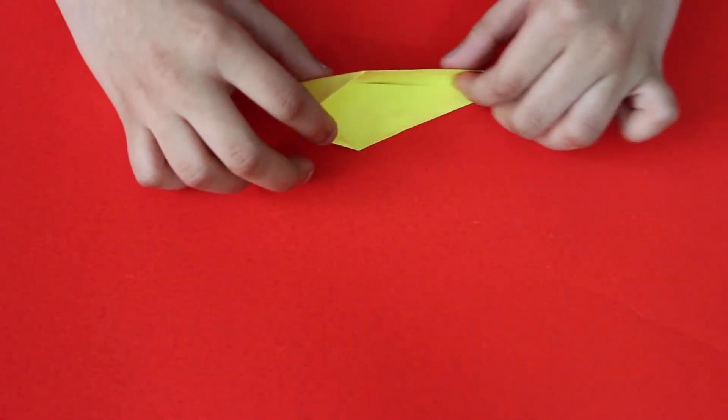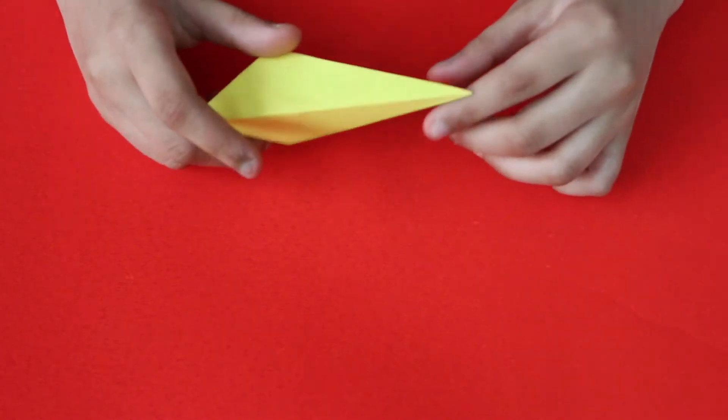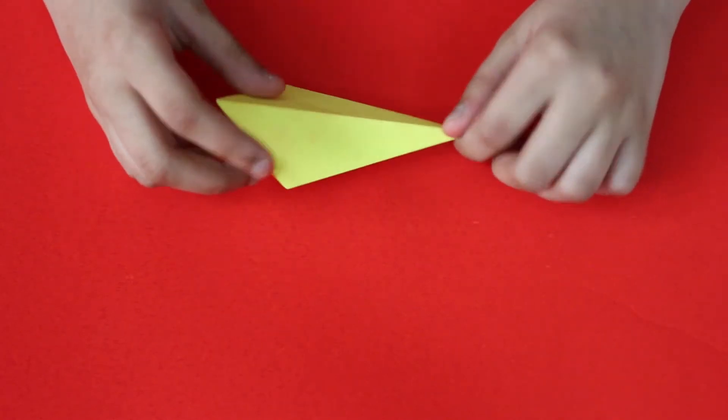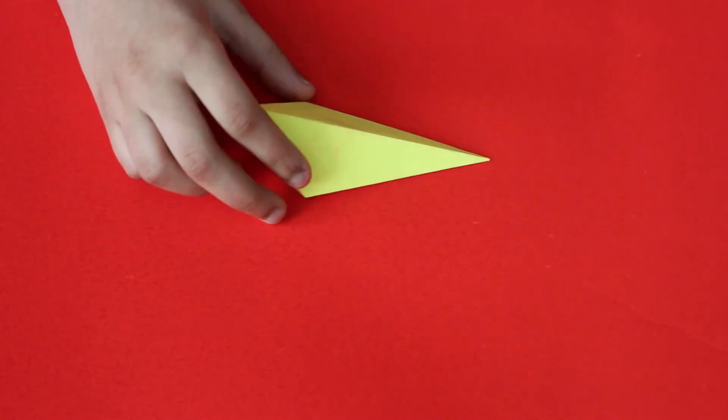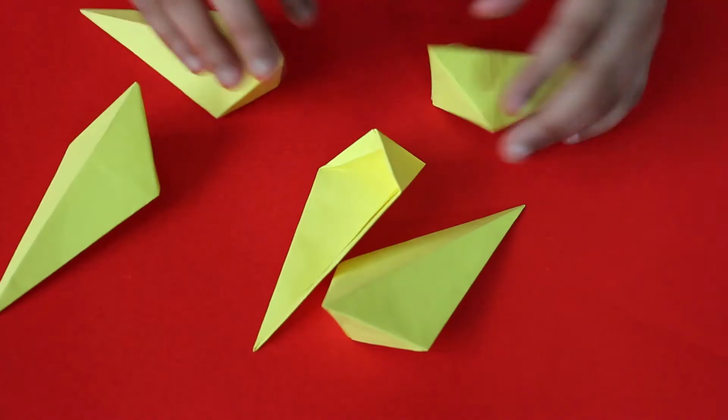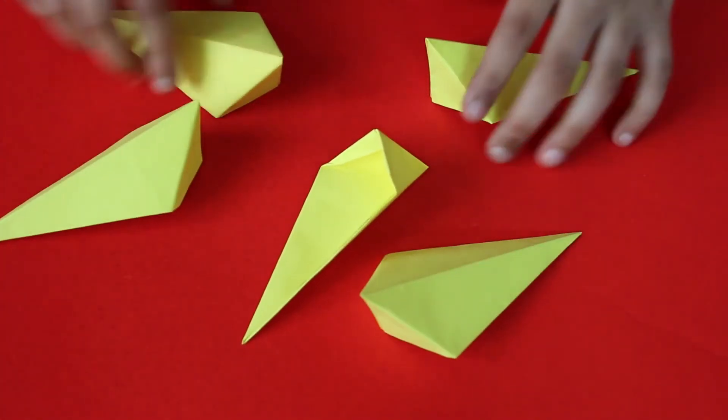One side of the star is done. The same thing we need to do for the other squares. Now we need to stick them all together.